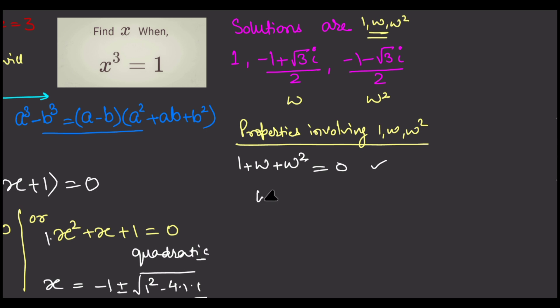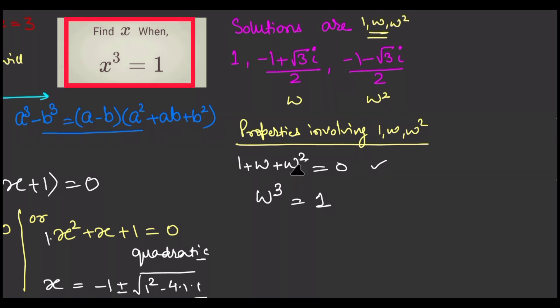Another property is omega cube is equal to 1. When you will cube omega, you will get 1. Similarly, the cube of omega square will also become 1. This is again obvious because they are the roots of the equation x cube is equal to 1, so they will satisfy that equation. So these 2 are important properties which are helpful in solving many problems.